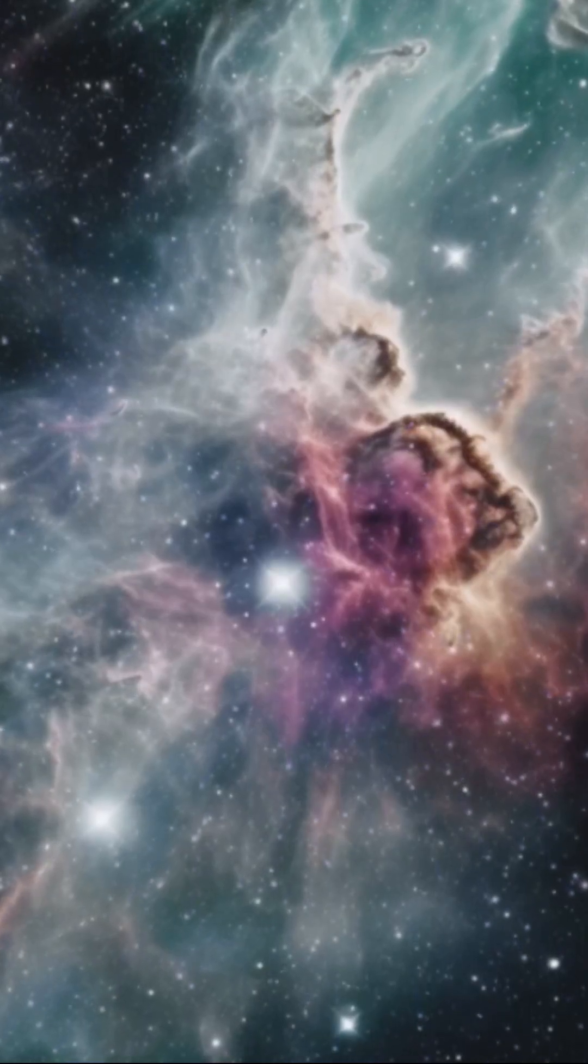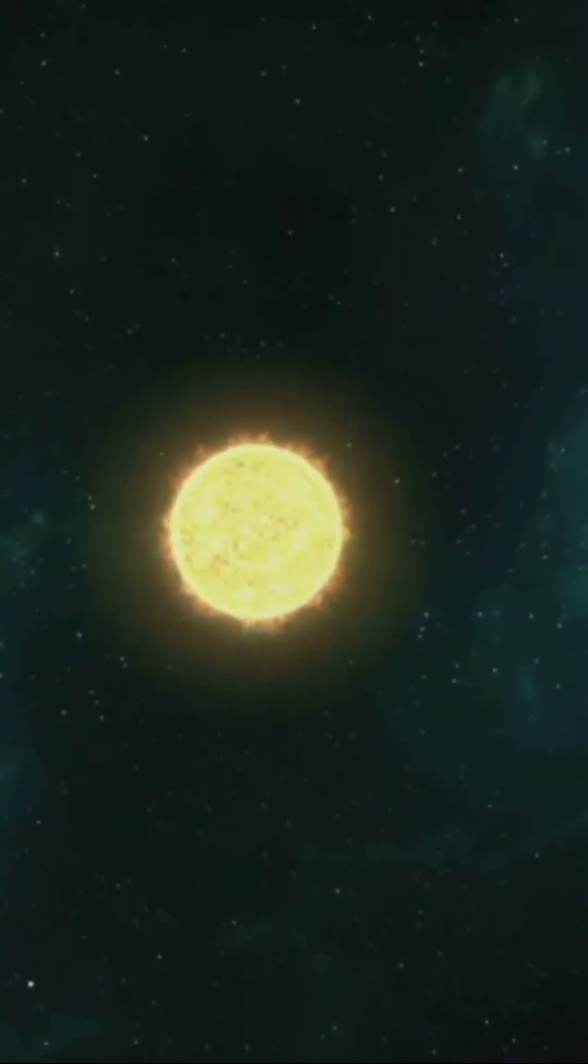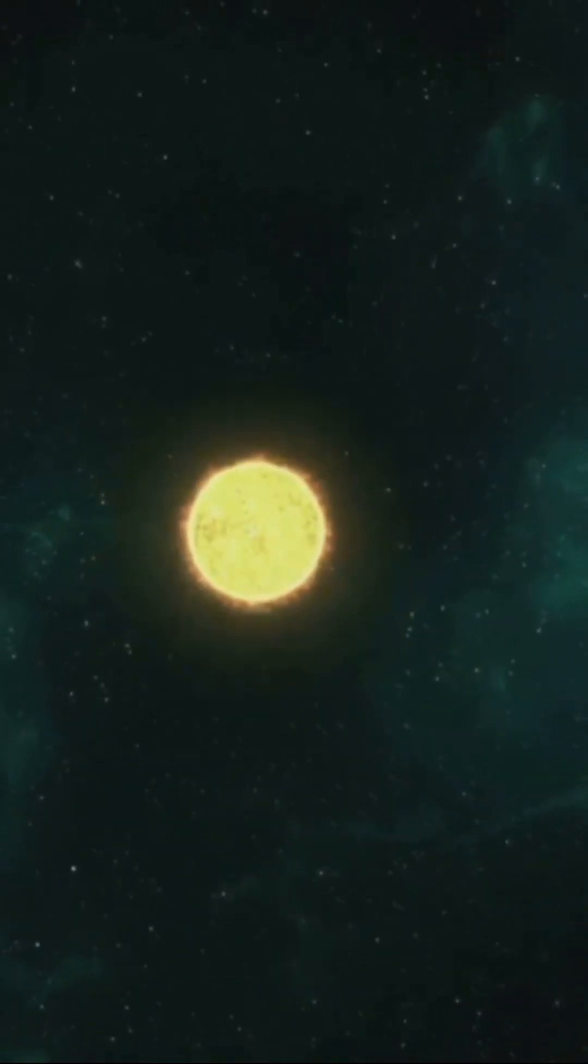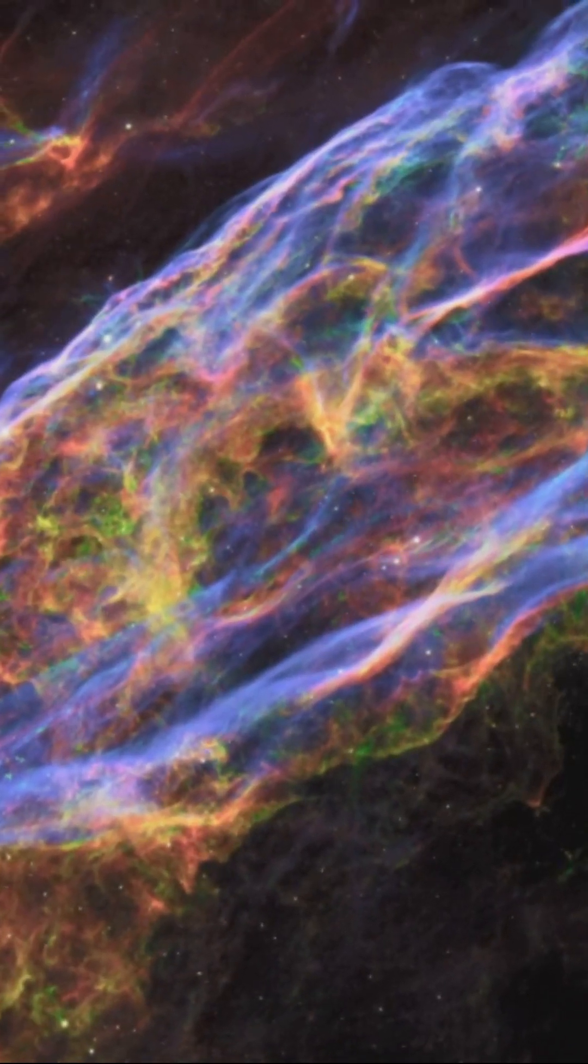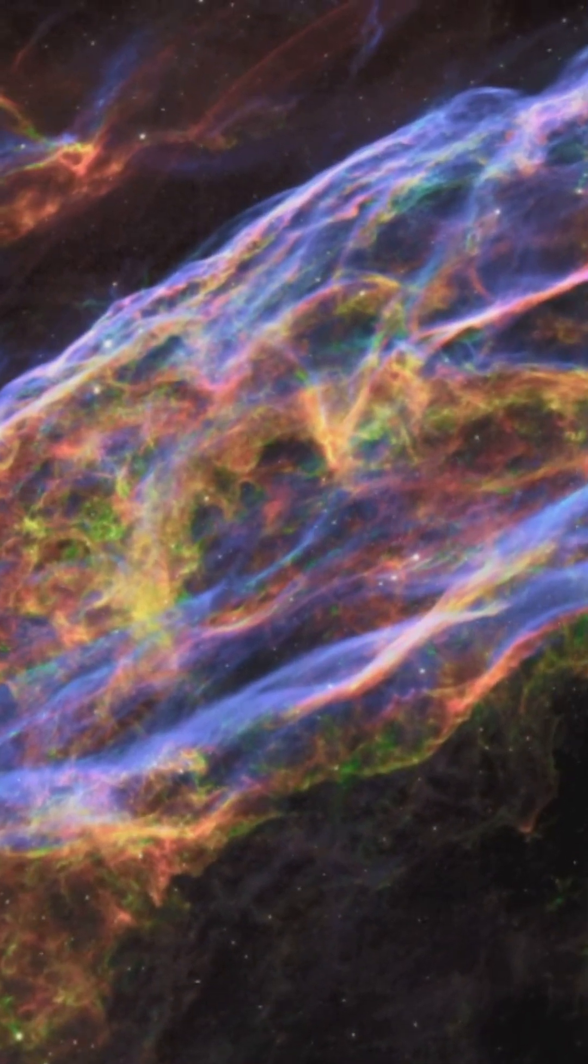Supernova remnants, like the Crab Nebula, form from the explosion of massive stars. The Veil Nebula is a large supernova remnant in the constellation Cygnus.